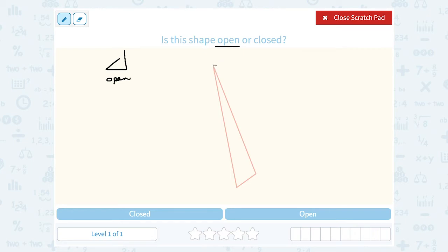So for example, if you look at the triangle we have here, there's no openings, right? Our line segments meet at this point at the three vertices or points of our triangle. So this would be a closed figure.